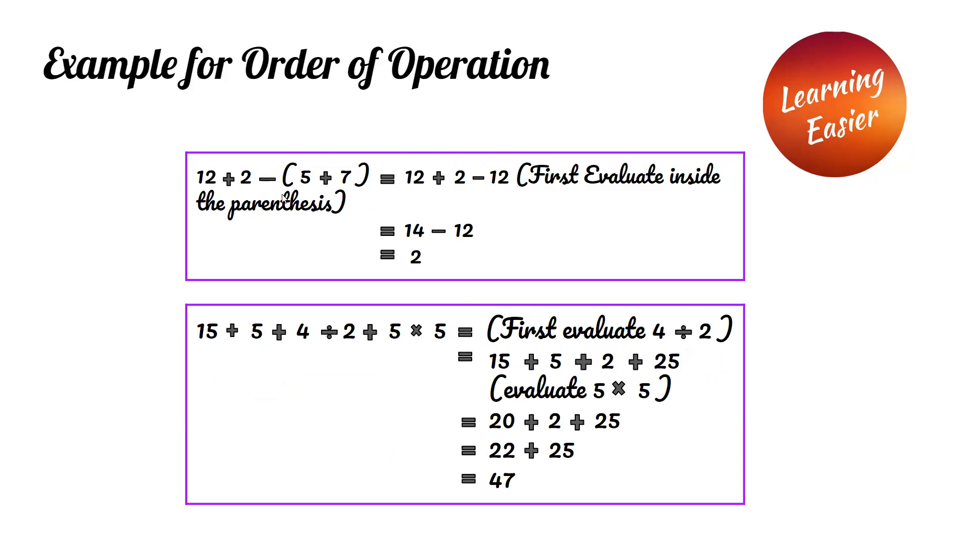12 plus 2 minus parenthesis 5 plus 7 parenthesis. First, we have to evaluate inside the parenthesis. So 5 plus 7 is 12. Since we have both addition and subtraction, we do left to right. 12 plus 2 is 14. 14 minus 12 is 2. So 2 is the answer for this example.